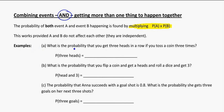As an example, what is the probability that you get three heads in a row if you toss a coin three times? Well, that's a head, and a head, and a head. We can think about, what's the probability of getting one head? That's 0.5.